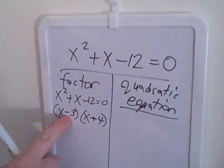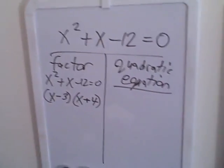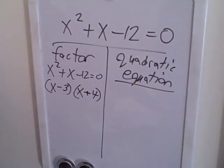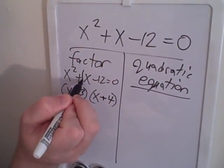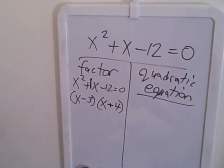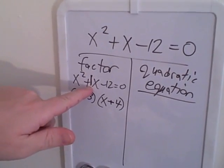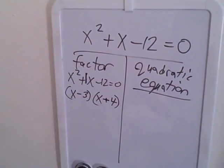When you add negative 3 and positive 4, what will you get? 1. Positive 1, which is exactly what that number is right there. If that 1 were negative, then this would be a different answer.